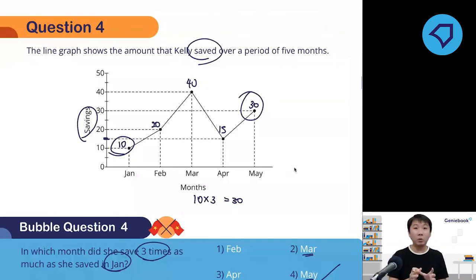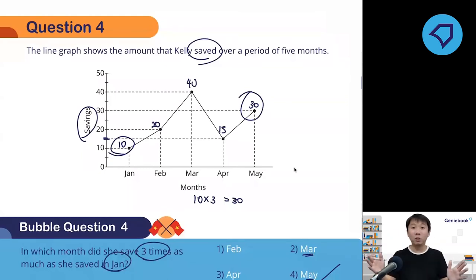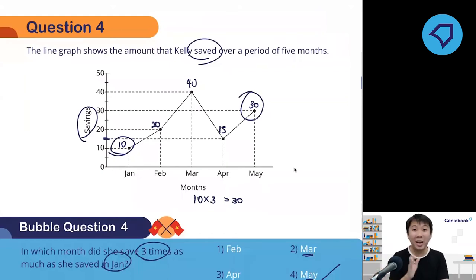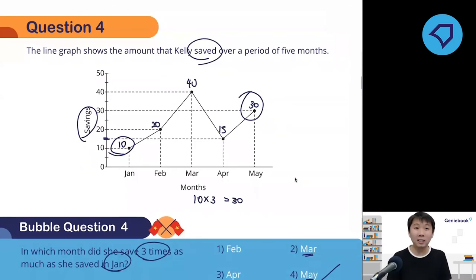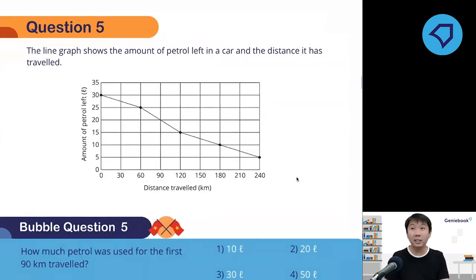When we say three times, twice, or four times — it is the exact value. You just multiply and get it. There is no need to do addition. There is no need to draw a model for this — it is quite straightforward.